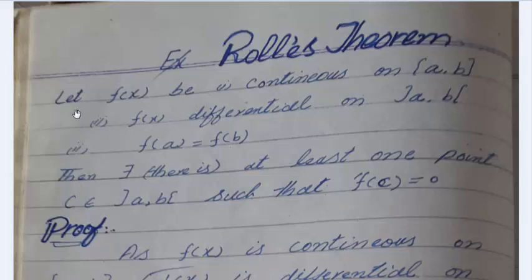So, let's start it. The statement is: let f be continuous on closed interval [a,b] and f is differentiable on open interval (a,b).